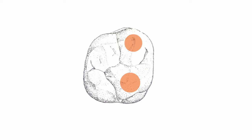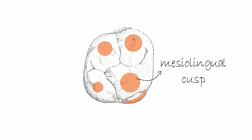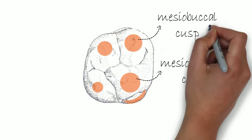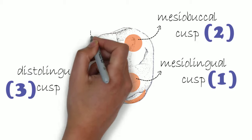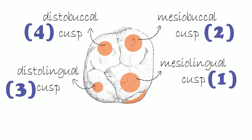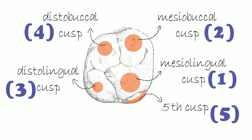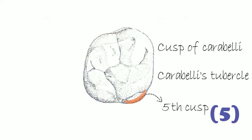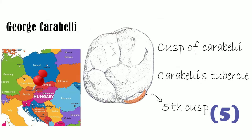From the occlusal aspect, all five cusps of the maxillary first molar are visible. The mesolingual cusp is the largest, followed by the mesobuccal cusp, then the distolingual cusp, then the distobuccal cusp, and the smallest is the fifth cusp. The fifth cusp is also known as the cusp of Carabelli or Carabelli's tubercle, named after George Carabelli, a Vienna dentist who first noticed it.